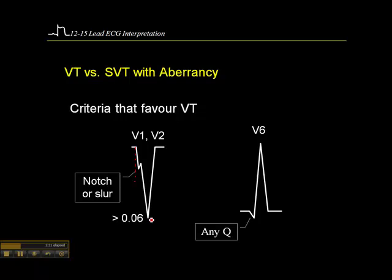Basically, if it's approximately two small squares, that favors ventricular tachycardia. Also, any Q-wave in V6 would favor V-tach. We don't always see notching or slurring in V1, and we don't always see Q-waves, but if these criteria do exist, then they both favor ventricular tachycardia.